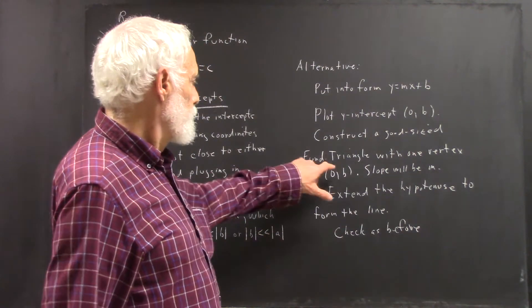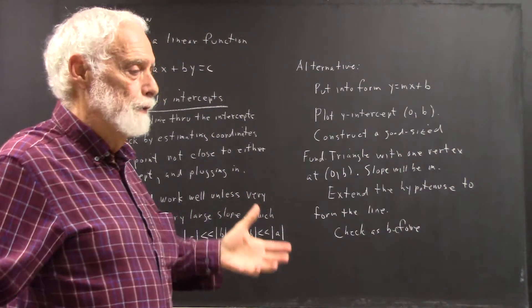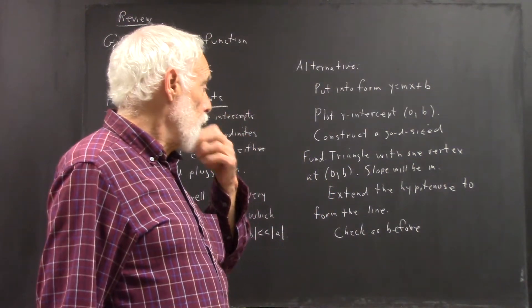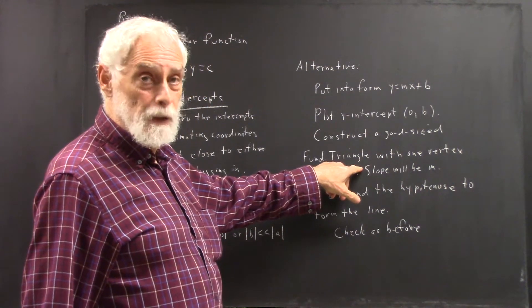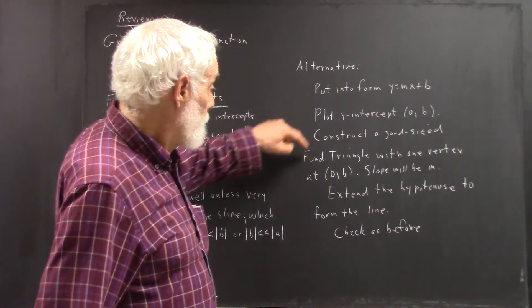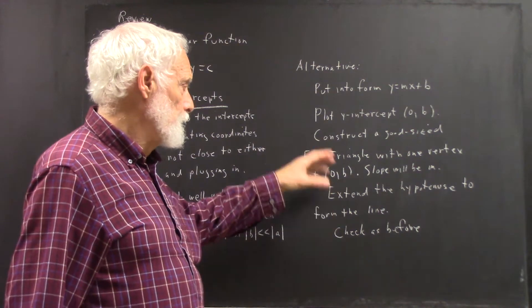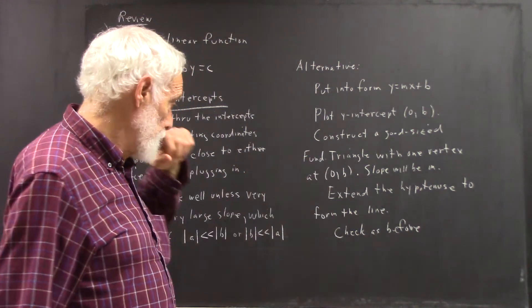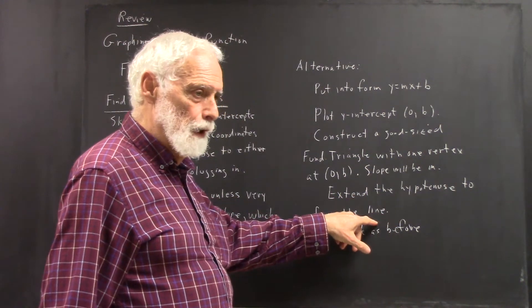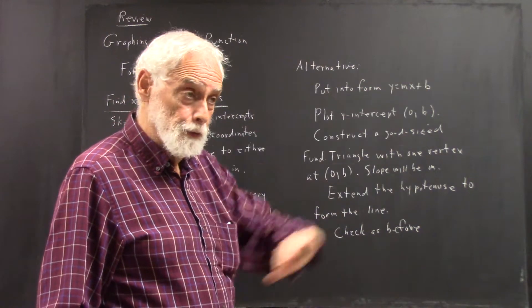Now, I'll mention the slope will be m. This fundamental triangle is something unique. I'm sure I'm not the only person that uses this triangle this way, but I don't know of any author that actually uses this terminology, but everybody should. Even if you're not familiar with the terminology, you'll see what I mean. And then we extend the hypotenuse to form the line. Take the hypotenuse and extend it, and there's our line.